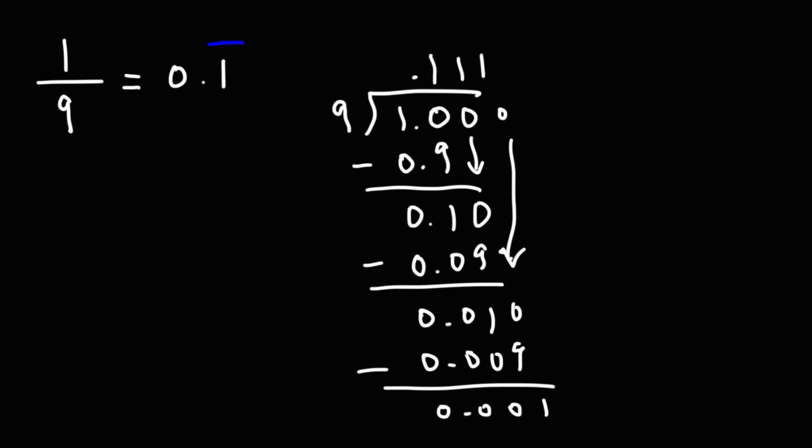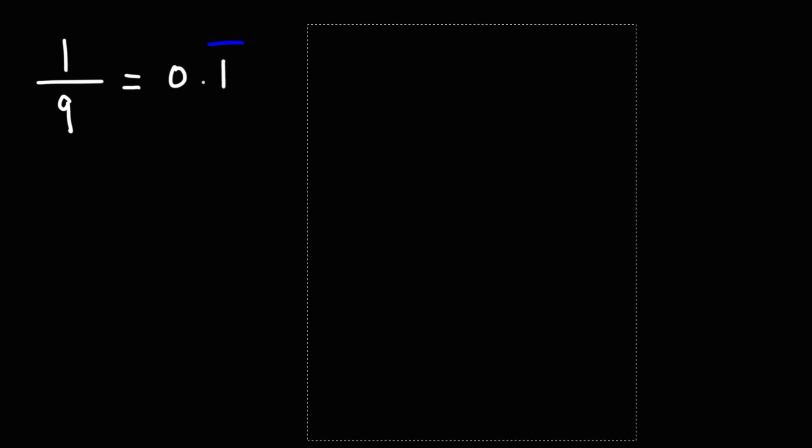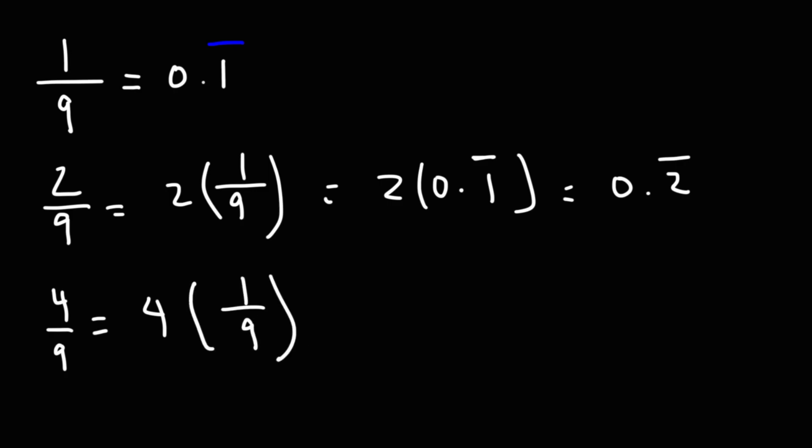So knowing that, what's 2 over 9 and 4 over 9? 2 over 9 is 2 times 1 over 9. And we know that 1 over 9 is 0.1 repeating. 1 times 2 is 2. So this is going to be 0.2 repeating. 4 over 9 is 4 times 1 over 9. So that's 4 times 0.1 repeating. 4 times 0.1 is 0.4. So 4 over 9 is 0.4 repeating.